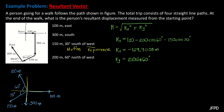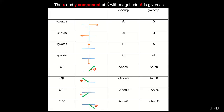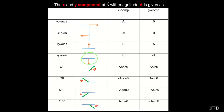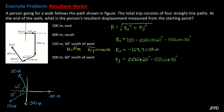For 150 meters in quadrant 3, the y-component is the negative of the magnitude multiplied by sine of the angle it creates with the negative x-axis: negative 150 meters times sine 30 degrees. For 300 meters on the negative y-axis, the y-component is the negative of its magnitude — that is, minus 300 meters.